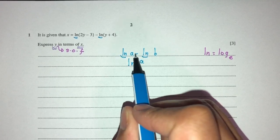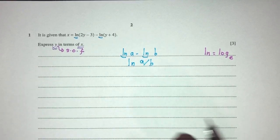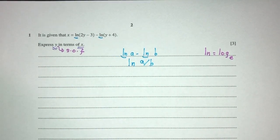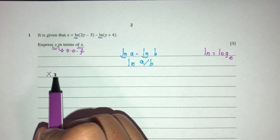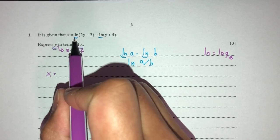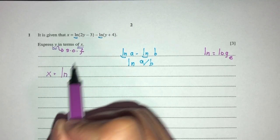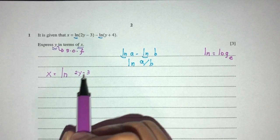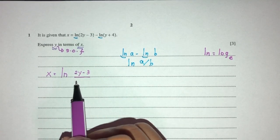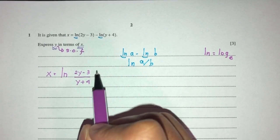Here we have A minus become divided by B. So similarly, here we have something similar. You will say this whole thing becomes x = ln, and the ln terms can be combined as one big ln, giving us ln of (2y minus 3) divided by (y plus 4). So for now we have this.